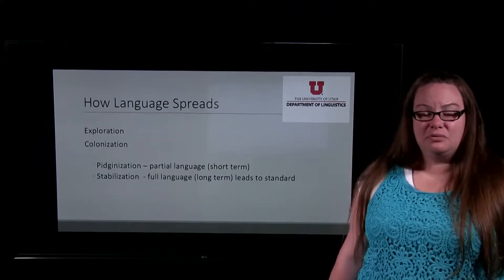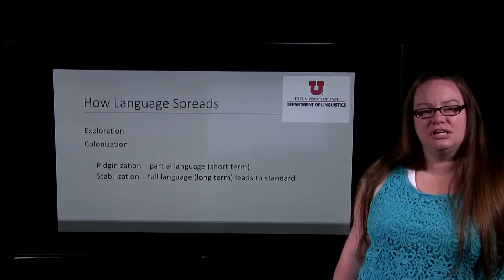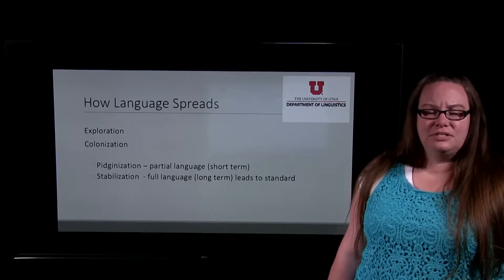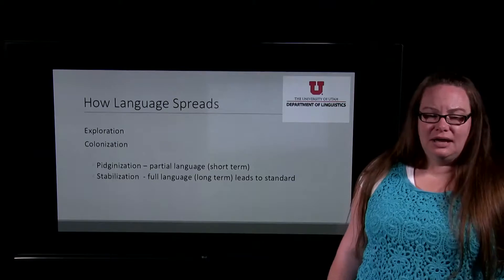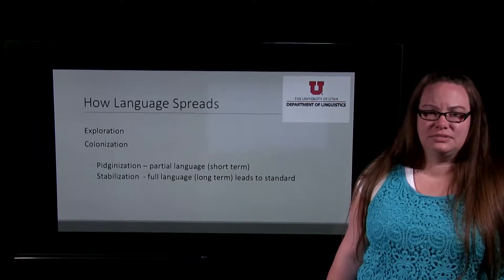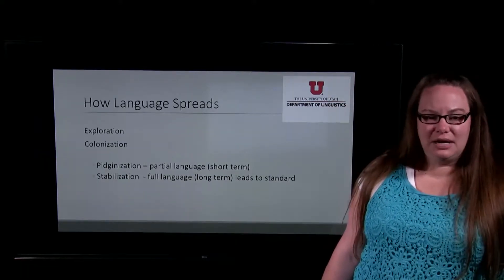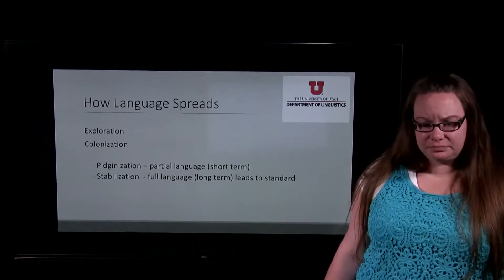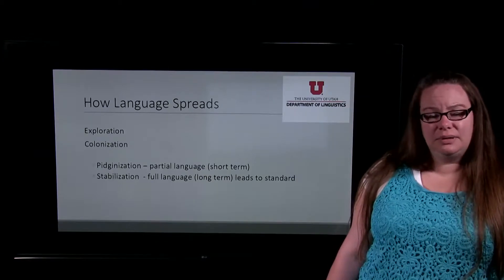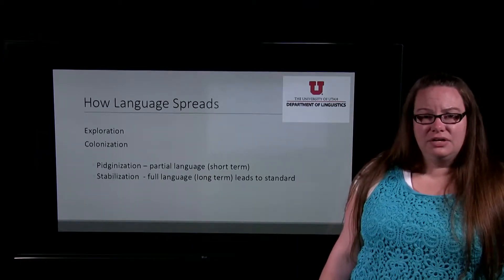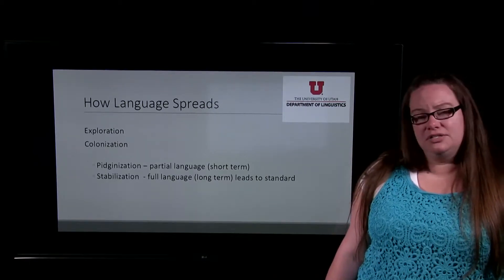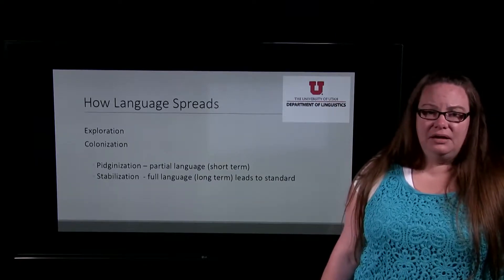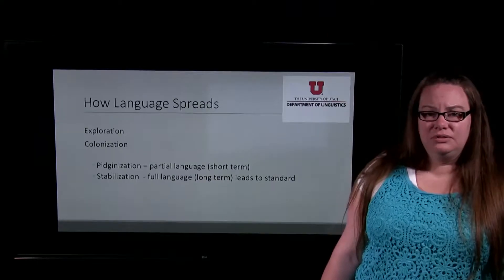The main two ways that a language spreads and becomes a world language are through exploration or colonization. When we're talking about exploration, it's usually a temporary arrangement — it might be through trade or other things. When we're talking about colonization, it's a more permanent arrangement, often at the expense of the local customs, language, and peoples. They often don't get a say in what happens during colonization. One outcome of these processes is called pidginization — where two languages come into contact, the speakers don't understand one another, and they start to make up a language somewhere in between. It mostly has the vocabulary of the higher-power language, but it's only used short-term for communication.